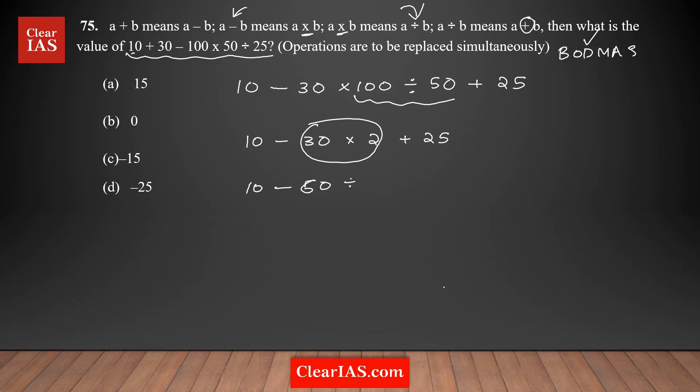You can do addition and subtraction here. 10 minus 60 is minus 50 plus 25, which equals minus 25. So this is the right answer, minus 25. Option D is the right answer for the question.